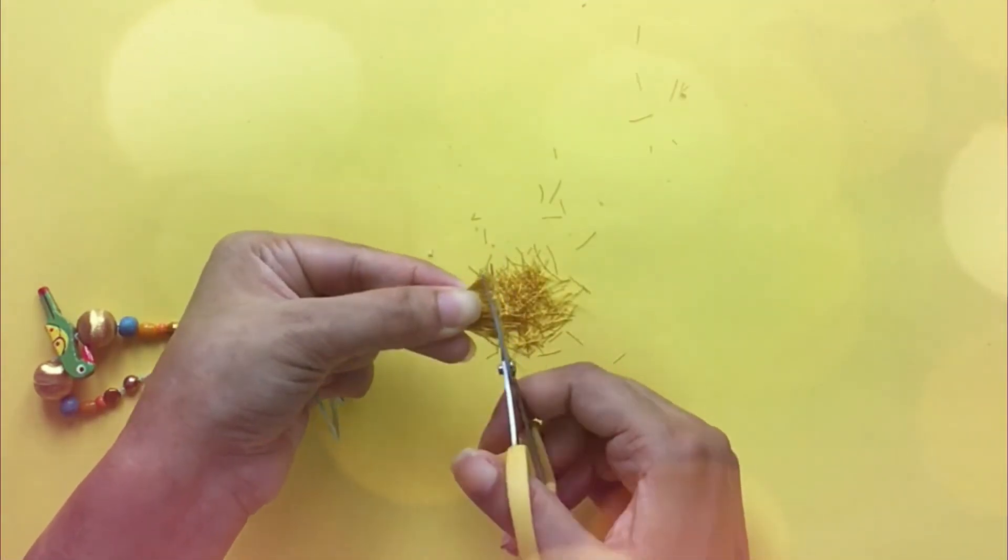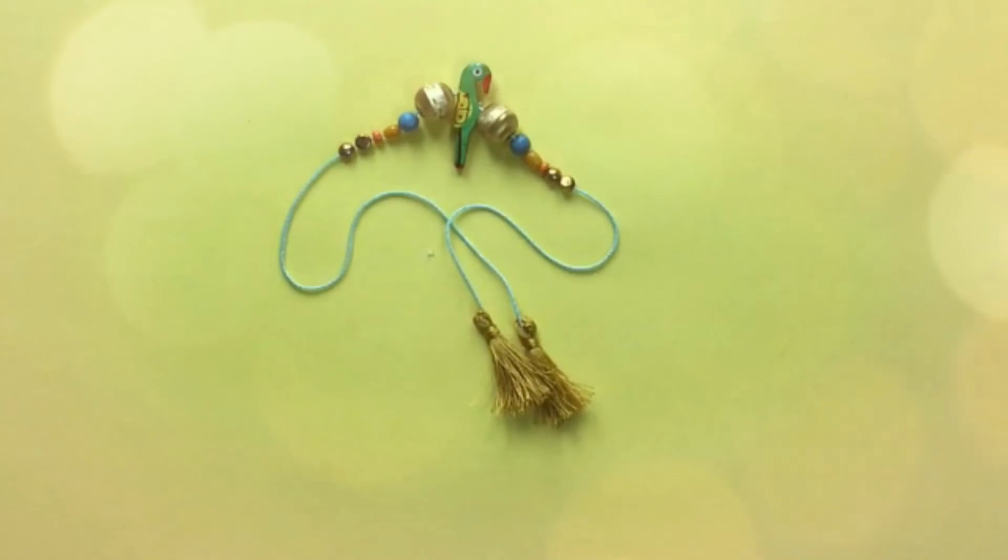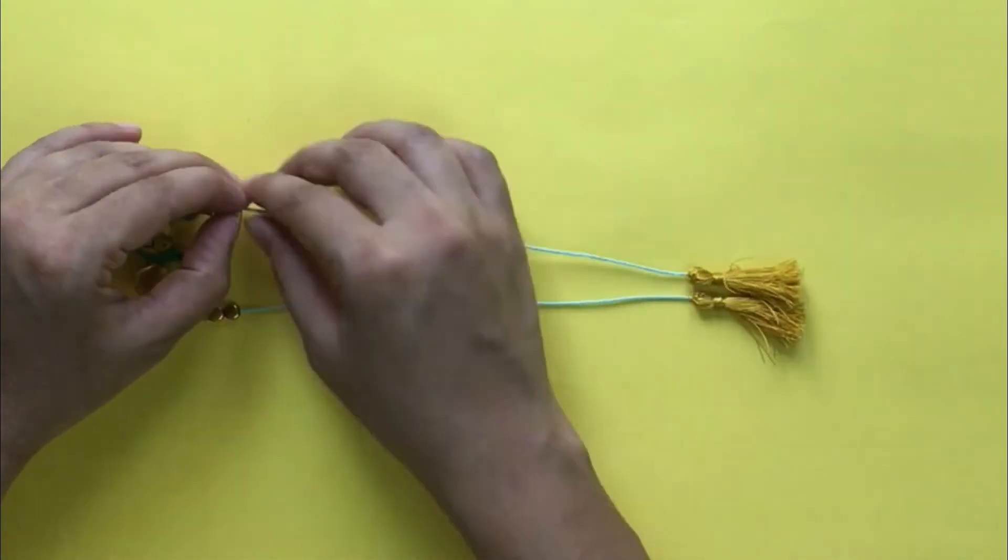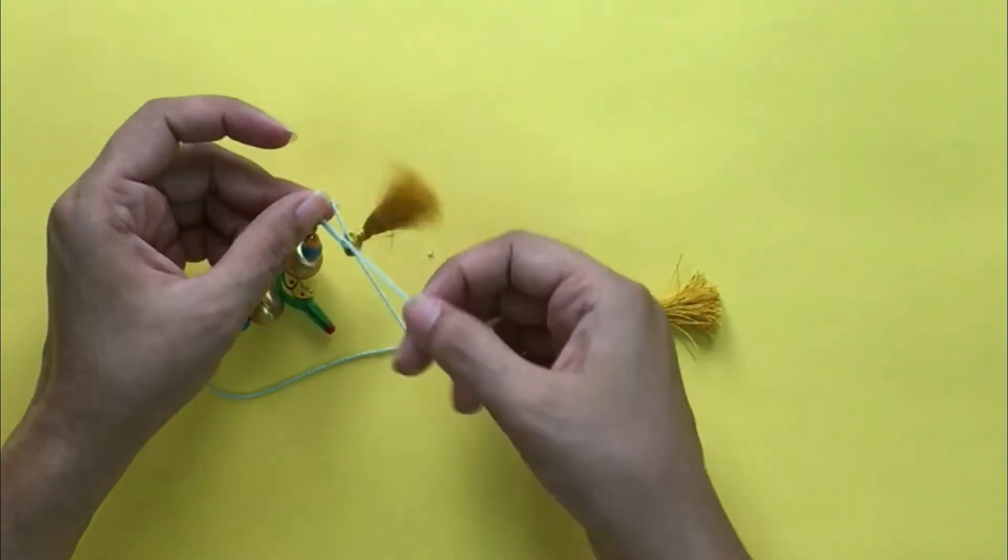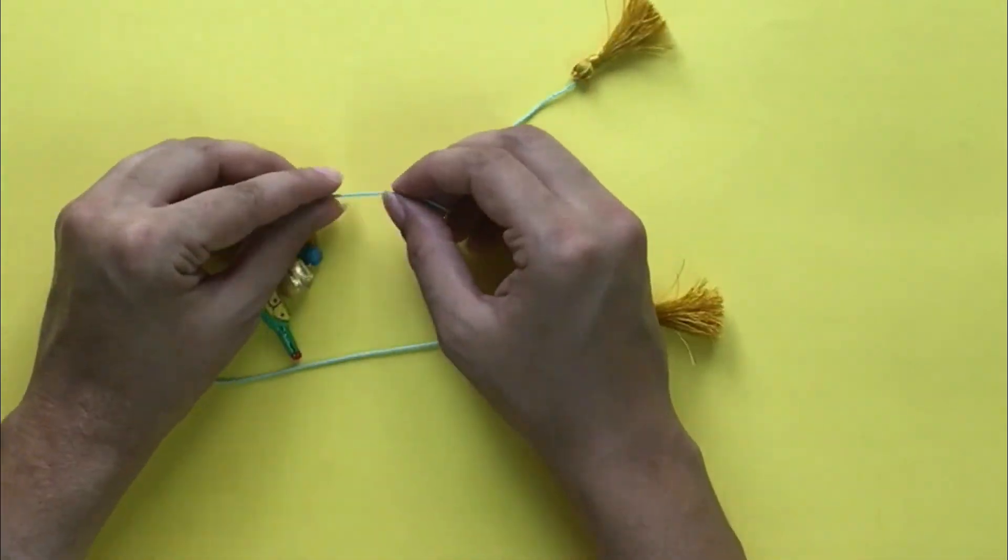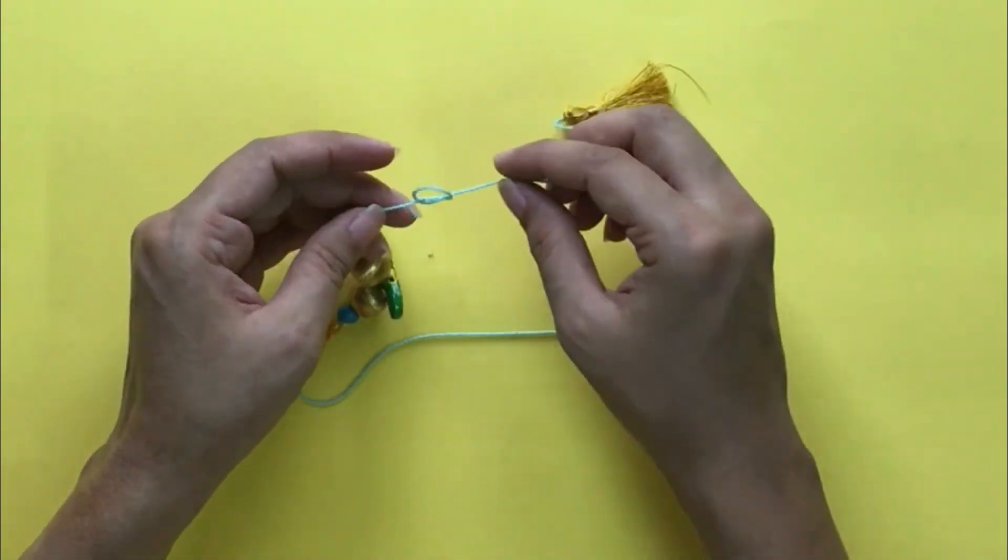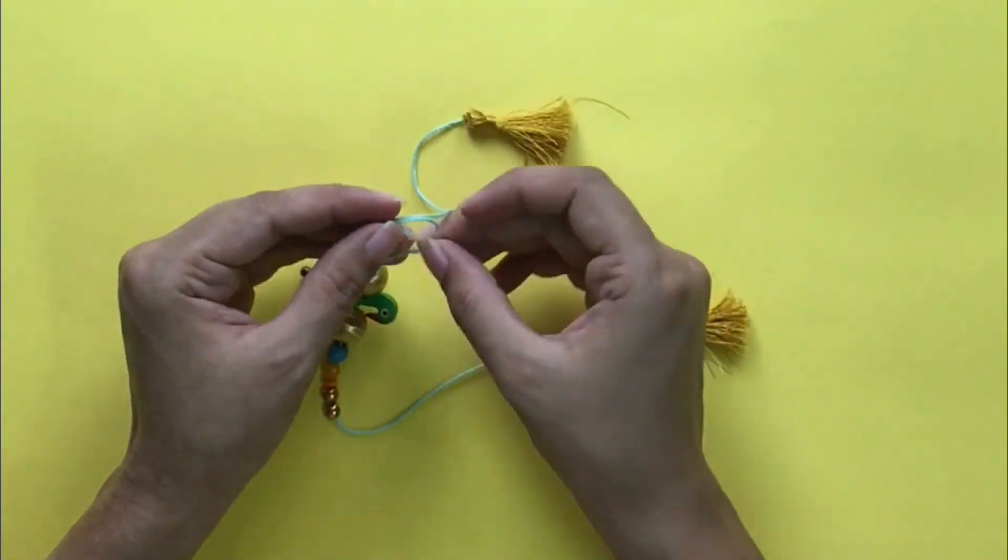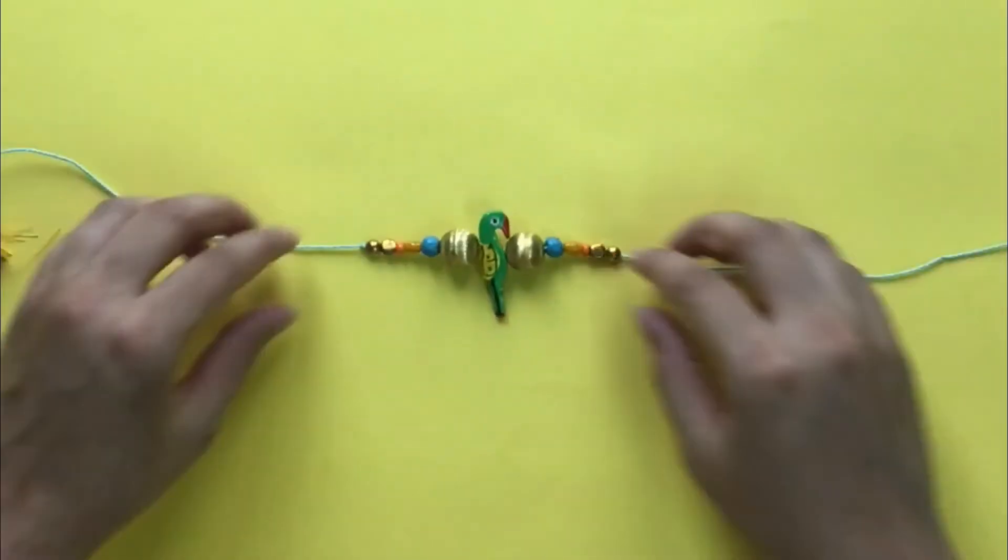Then make the tassels for this rakhi as well and attach them. Final step is to put the knots on both the sides of the beads on the thread keeping the beads in the center so that the beads don't move around the thread.